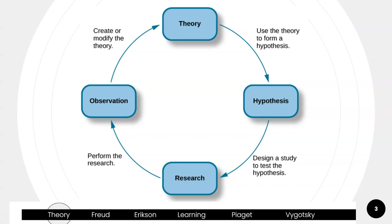A theory is an explanation. For example, for Eric Erikson, his theory was that the first year of life the big conflict is for the child to develop a sense of trust or mistrust based on whatever the environment requires. So if someone were going to design a study, they would formulate a hypothesis based on Erikson's first stage: if a child is provided with support, love, and consistency during the first year of life, they will establish a sense of trust. That's the hypothesis.